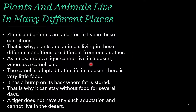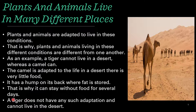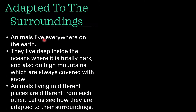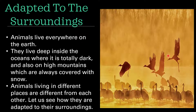That is why plants and animals living in different conditions are different from one another. For example, a tiger cannot live in a desert whereas a camel can. As we can see in this image of a desert area, we can see camels — not tigers. Camels have adapted themselves to live in the desert where there is very little food. A camel has a hump on its back where fat is stored, so it can stay without food for several days. A tiger doesn't have any such adaptation and cannot live in the desert.